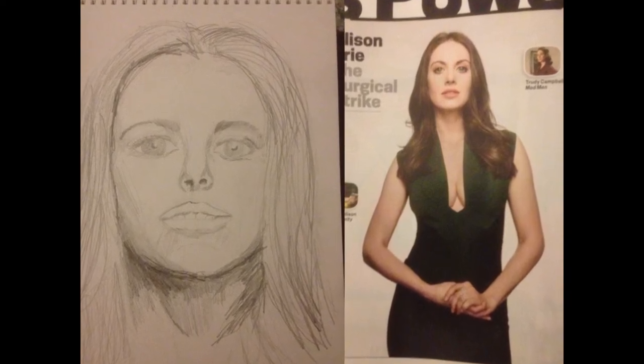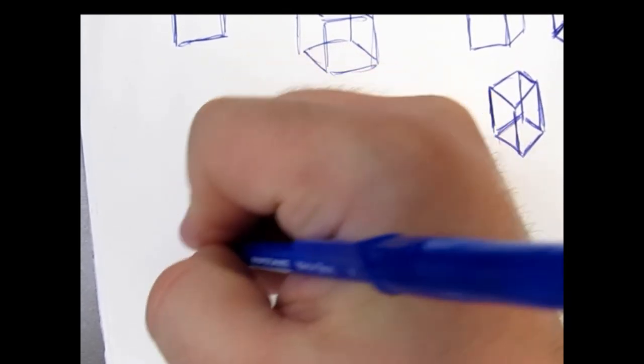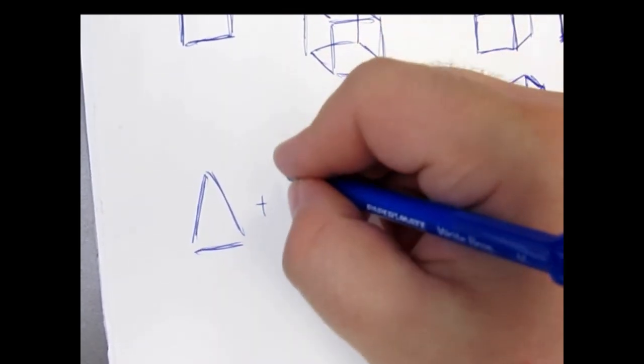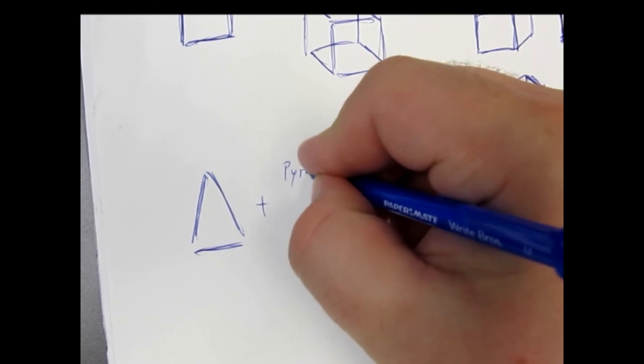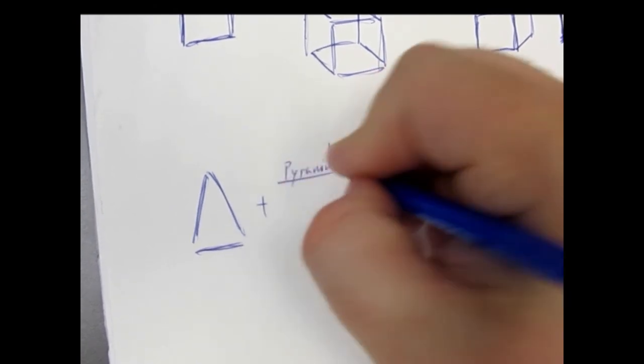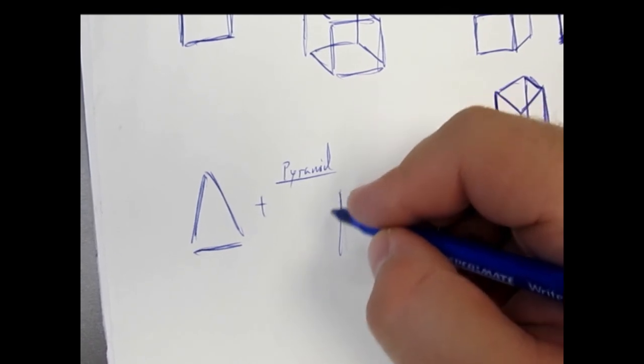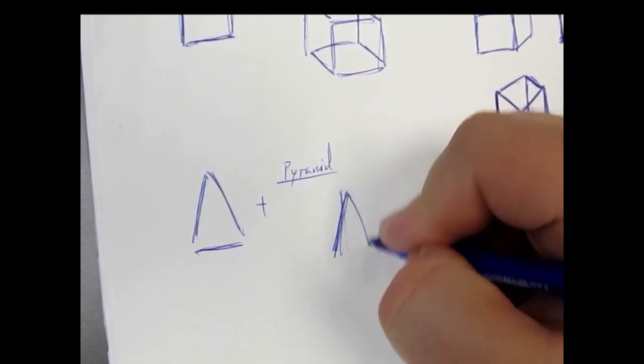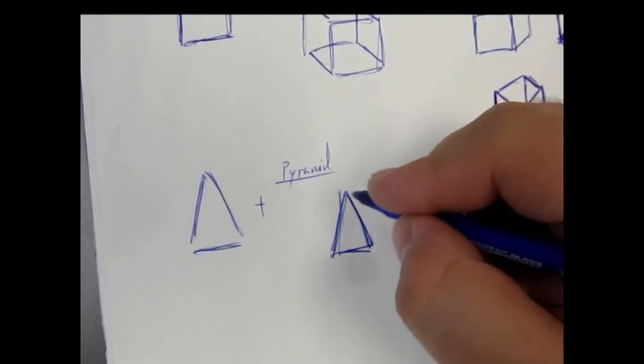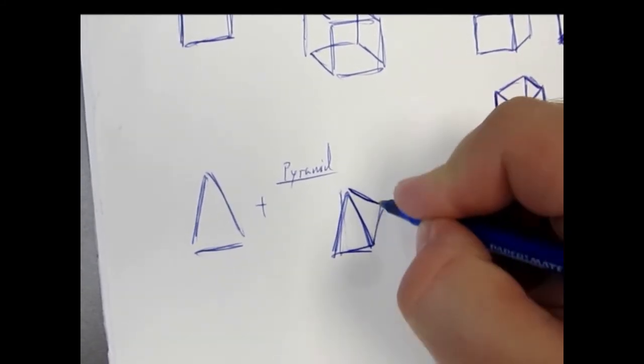The next section that we're going to be working on is the pyramid. For the pyramid, start off with the basic side of it which is a nice triangle. You're going to take that triangle and to this we're going to add a few lines. It's all we're doing here—we're taking those basic shapes and adding some basic lines to create the shapes that we're trying to work with.